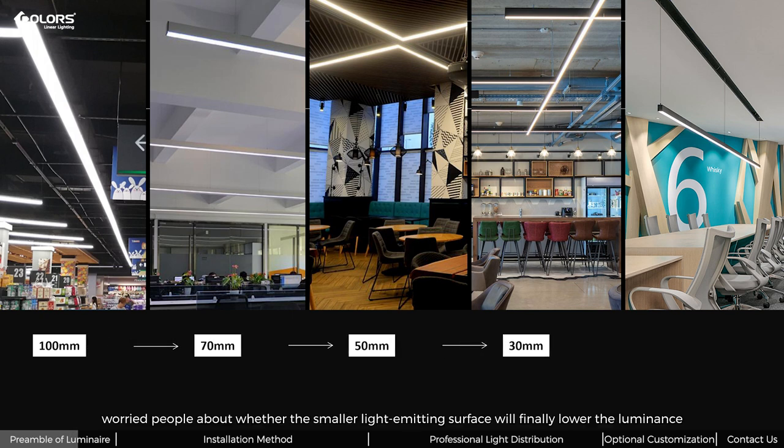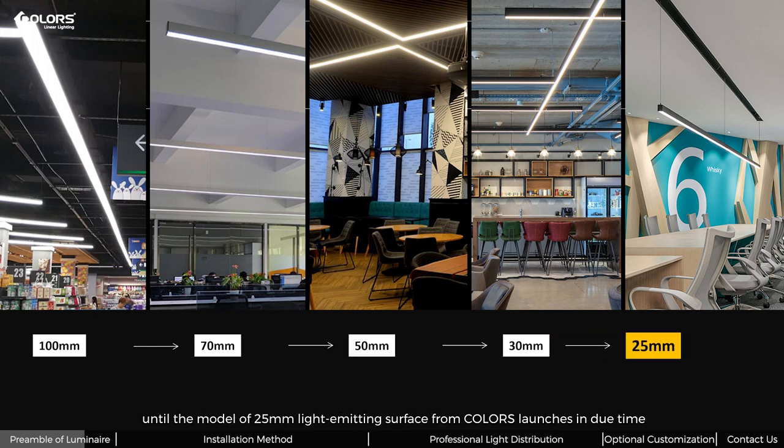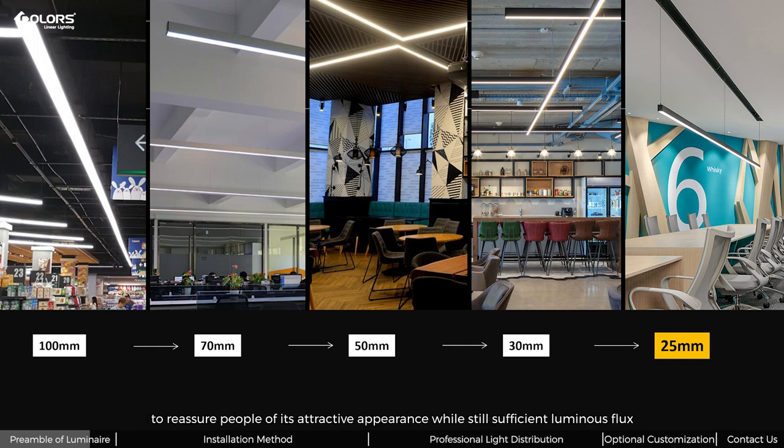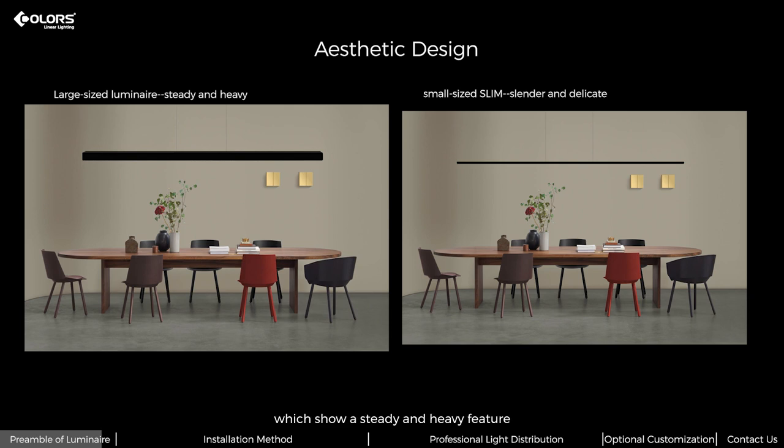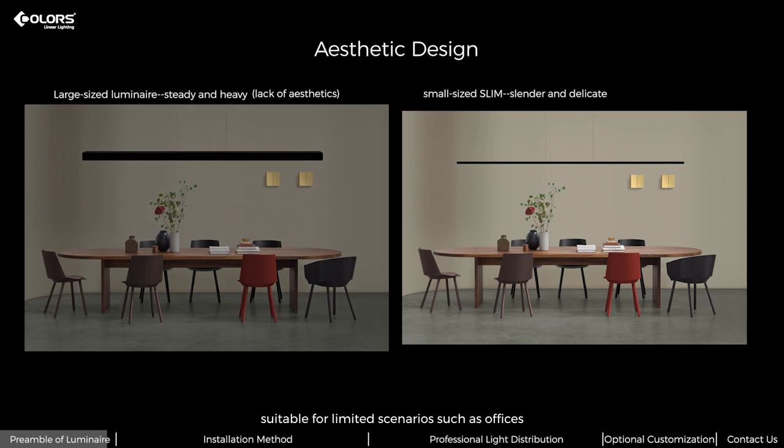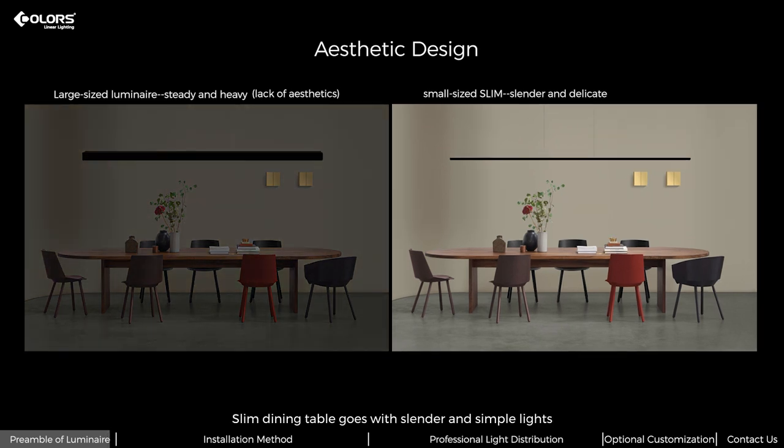But to some extent, people doubt that the smaller light-emitting surface will lower the luminance until the model of 25mm light-emitting surface when Colors launched in good time to reassure people of this attractive appearance while still sufficient luminance. Now compare these two pictures from the perspective of aesthetic design. Picture 1: large-sized lights which show a steady and heavy feature, suitable for limited scenarios such as office. Picture 2: Slim dining table goes with slender and simple lights, almost suitable for every scenario.